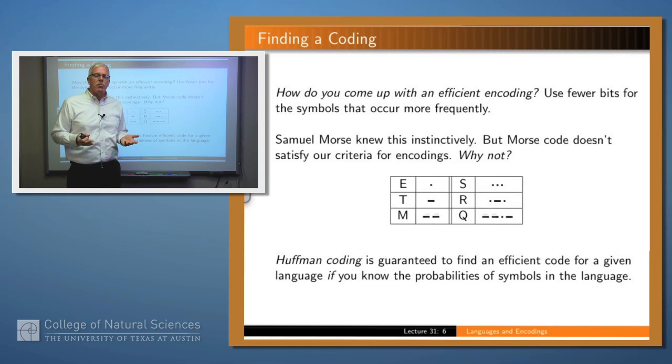So how do you come up with an efficient encoding? Well, we'll talk about that in a bit. But in general, what you want to do is use the fewest possible bits for the symbols which are most likely in the language. So for example, if you look at Morse code, here's some Morse code for a few letters. E is a dot and S is three dots and T is a dash and so on. Well, this seems to fail our criteria because if you had three dots in a row, how would you know if that was three E's or an S? Well, it turns out that Morse code does not satisfy our criteria because it's not streaming. And that means in this case that there's a break between each letter in Morse code. And so the receiver can distinguish those capabilities or those letters or those possibilities.